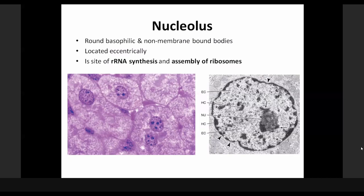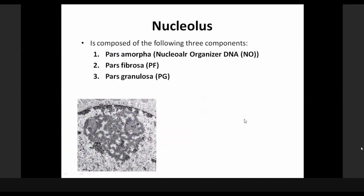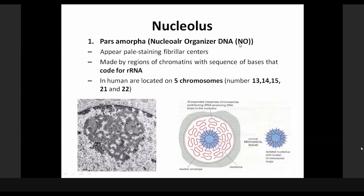These chromosomes are found around a region within the nucleolus known as pars amorpha. We also have within the nucleolus the recently transcribed RNA, named as pars fibrosa, and the assembled ribosomes as pars granulosa. The DNA regions for transcription of ribosomal RNA — the nucleolar organizer DNA — are found only on chromosomes number 13, 14, 15, 21, and 22.